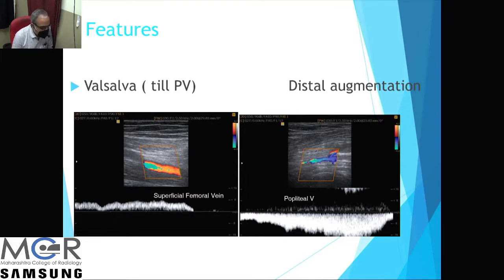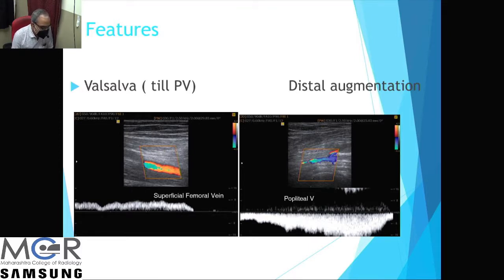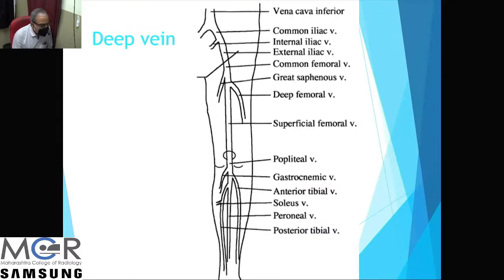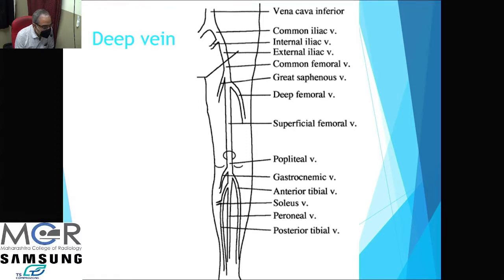Distal augmentation involves identifying the vein with the probe and compressing at a lower level. For example, if you are seeing the femoral vein, compress the popliteal or calf to increase flow and confirm patency between the probe and point of compression. For calf vein analysis, compress the lower leg; for the lower leg, compress the foot. Regarding deep vein anatomy, there are three pairs of veins in the leg — posterior tibial, anterior tibial, and peroneal — which join to form the popliteal vein.